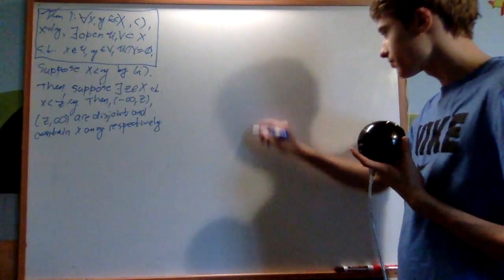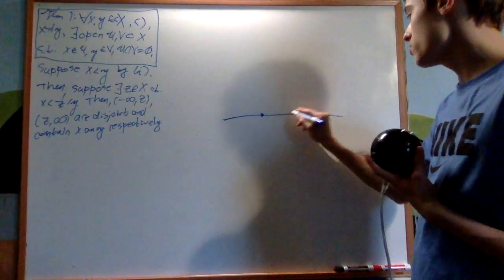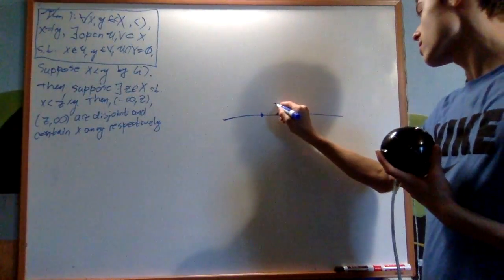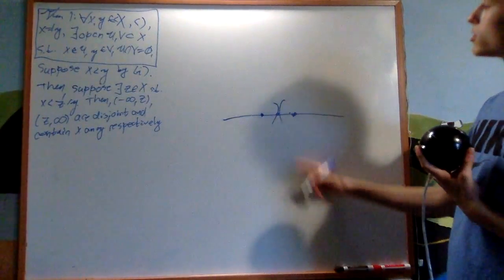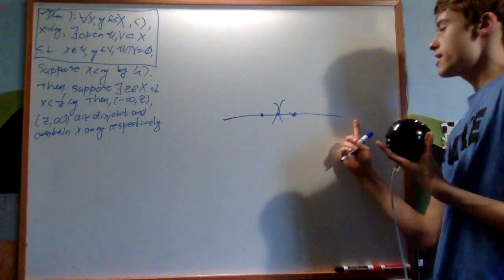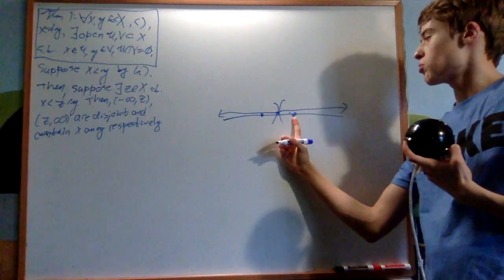Basically meaning I have my two points here, I find a third point in between them, I do these two intervals. They're disjoint and they contain x and y. So this contains x, this one contains y.